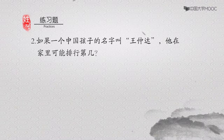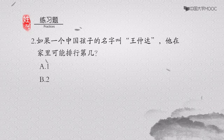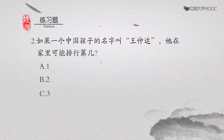第二题:如果一个中国孩子的名字叫王仲达,他在家里可能排行第几?A,第一。B,第二。C,第三。正确答案:B。